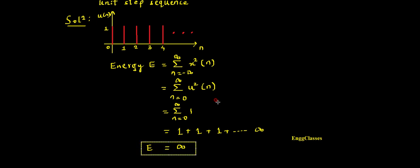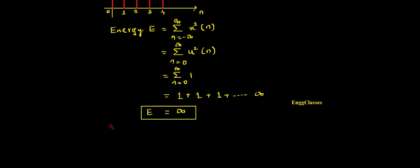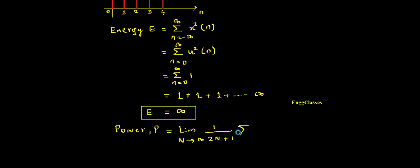So it is not an energy signal. The given unit step sequence is a power signal. So now I need to find the power. For this also we have a straight formula: Power P is equal to limit as capital N tends to infinity of 1 divided by (2N plus 1), summation n from 0 to capital N of x squared of n. In place of x(n) we have u(n), hence u squared of n.